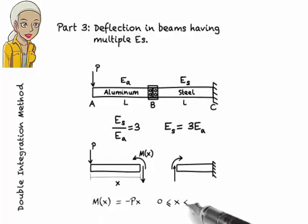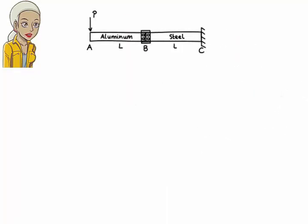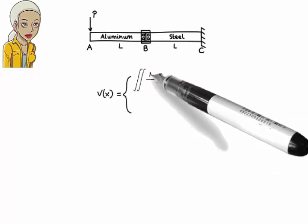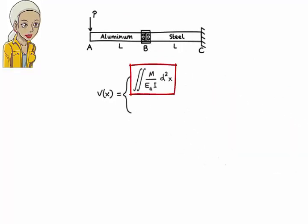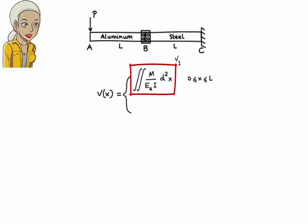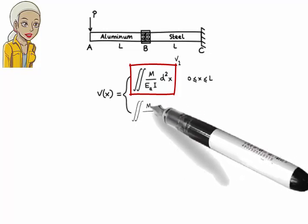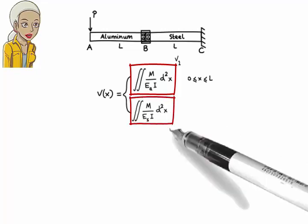Similar to the previous example, here we need to set up two deflection equations: one for the aluminum segment and one for the steel segment. The deflection equation for the aluminum segment, V1, is given by the double integral of M over E sub A times I, valid for x between 0 and L. The deflection equation for the steel segment, V2, is given by the double integral of M over E sub S times I, valid for x between L and 2L.